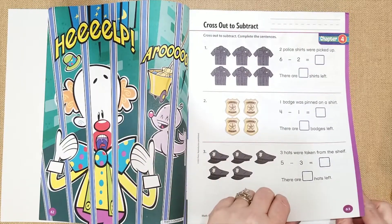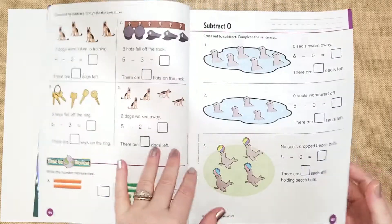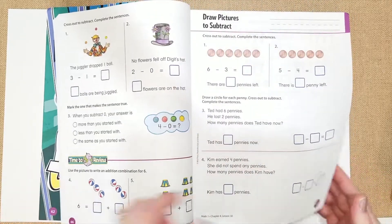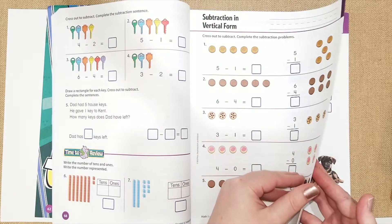So this one is cross out to subtraction. This is something that I think will be super simple for her, but it's just always good to review.